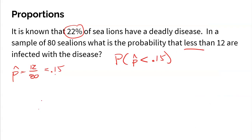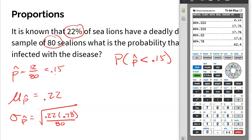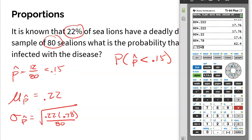This is just one sample — there are many possible samples of 80 sea lions. The mean of all possible sample proportions should be 22%, since that's the true proportion. For the standard deviation, we use the formula: square root of P(1−P)/n = square root of (0.22 × 0.78) / 80, which gives a standard deviation of 0.0463.